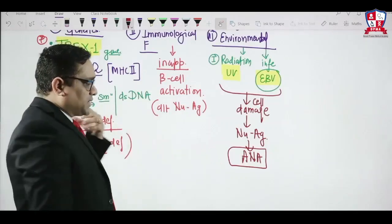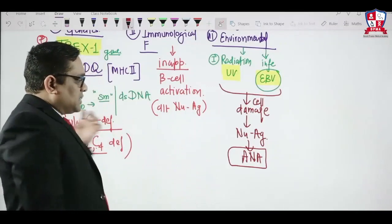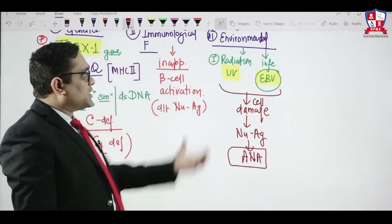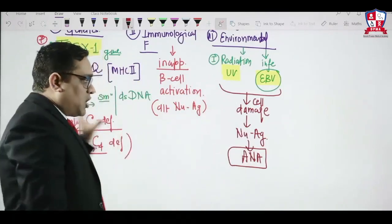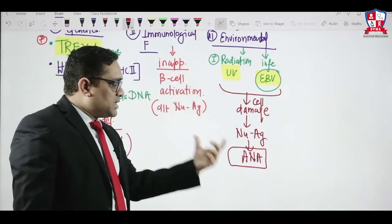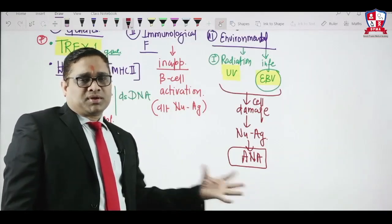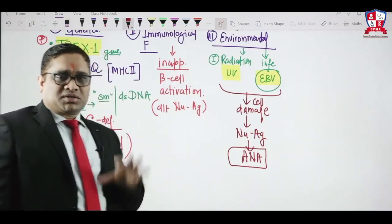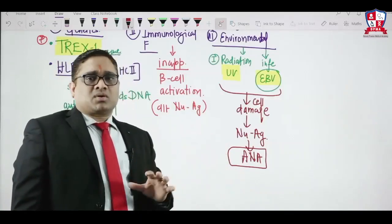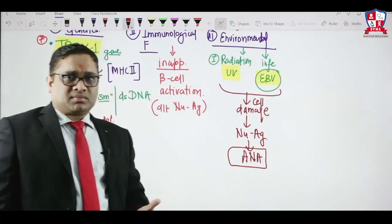In summary, SLE pathogenesis is multifactorial — genetics, immunological factors, and environmental factors all cause cell damage, and ultimately anti-nuclear antibody formation is seen. This is the pathogenesis of SLE, and now we go to clinical features.